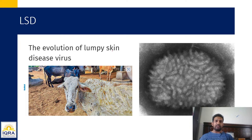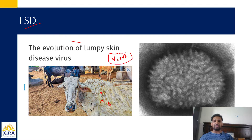Now we are going to study about LSD — Lump Skin Disease. Aap dekh rahe hain ki skin pe kis tarike se patches hain. Basically seen in cattle. Yeh skin disease hoti hai virus se. This skin disease is caused by microorganisms called virus. Yeh virus ek category mein aate hain — that category is called as pox virus. Pox virus is a group of viruses whose genome is very large — largest DNA hoti hai.